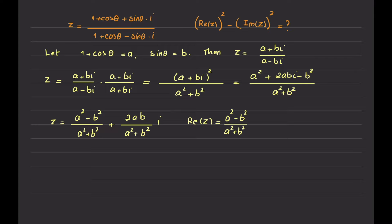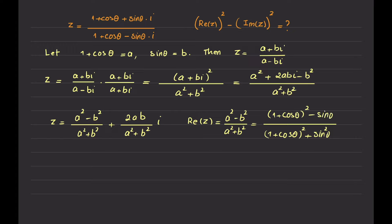A and B are the variables I introduced to simplify the calculations, so I have to switch back to the original variable theta. In the denominator, I substitute A as 1 plus cosine theta squared, plus B squared which is sine theta squared. In the numerator, I have 1 plus cosine theta squared minus sine theta squared.